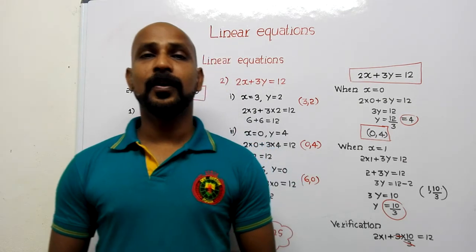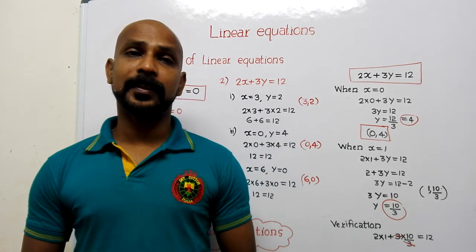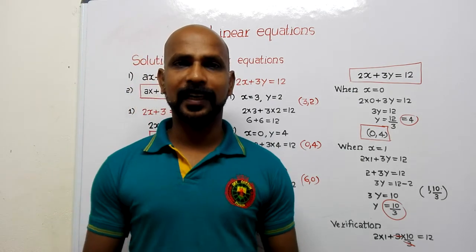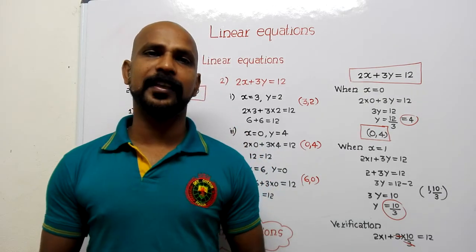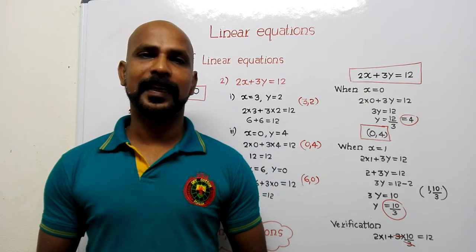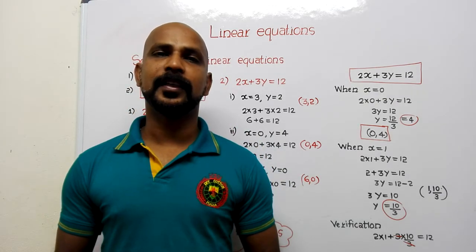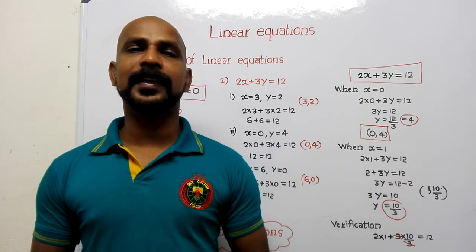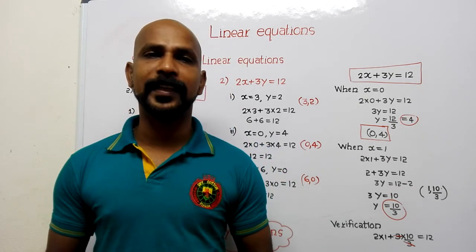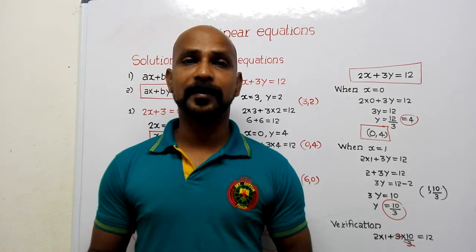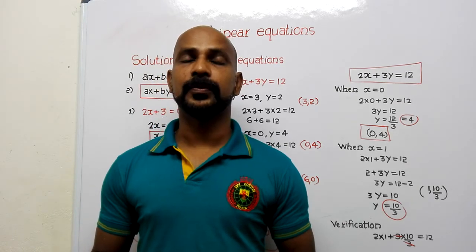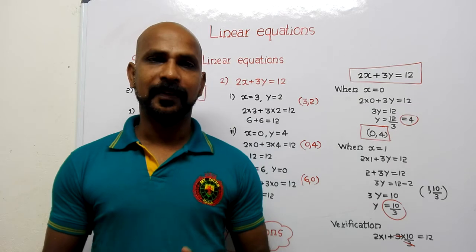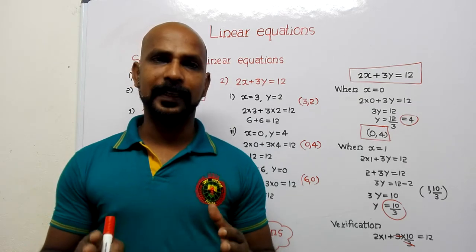We already learned about linear equations in one variable. The general form of a linear equation in one variable is ax plus b equal to zero, and the general form or standard form of linear equations in two variables is ax plus by plus c equal to zero.